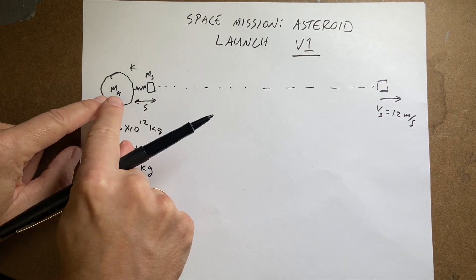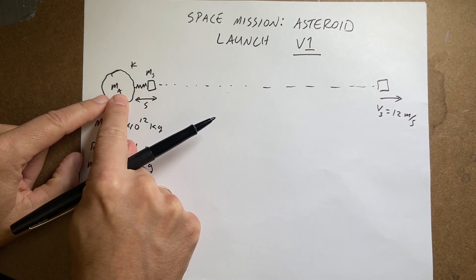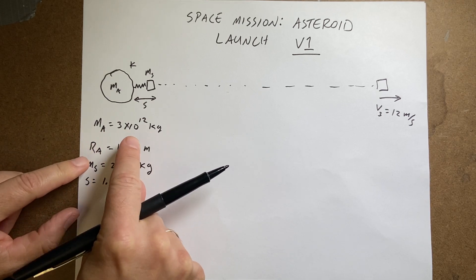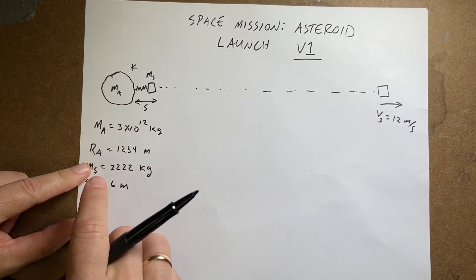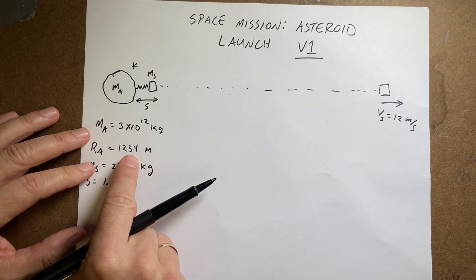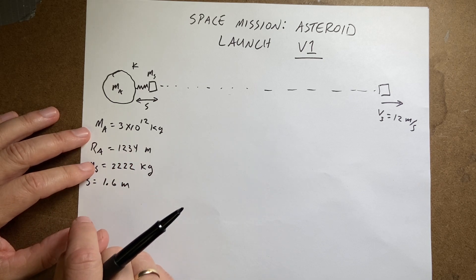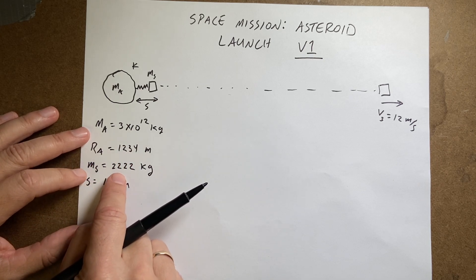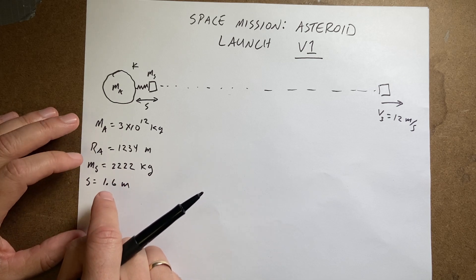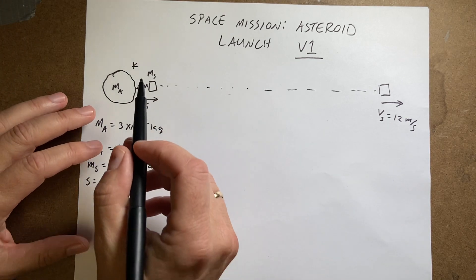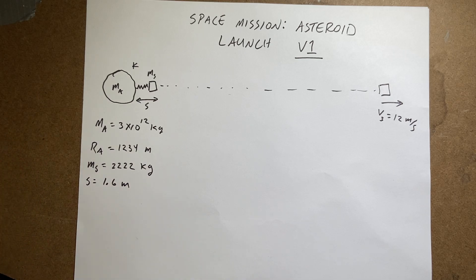So the question is: if I know the mass of the asteroid — which I picked — 3 times 10 to the 12 kilograms, and the radius of the asteroid is 1,234 meters. Can you tell that I made that up? And the mass of the spacecraft is 2 kilograms, and the compression distance is 1.6 meters — what spring constant do I need?